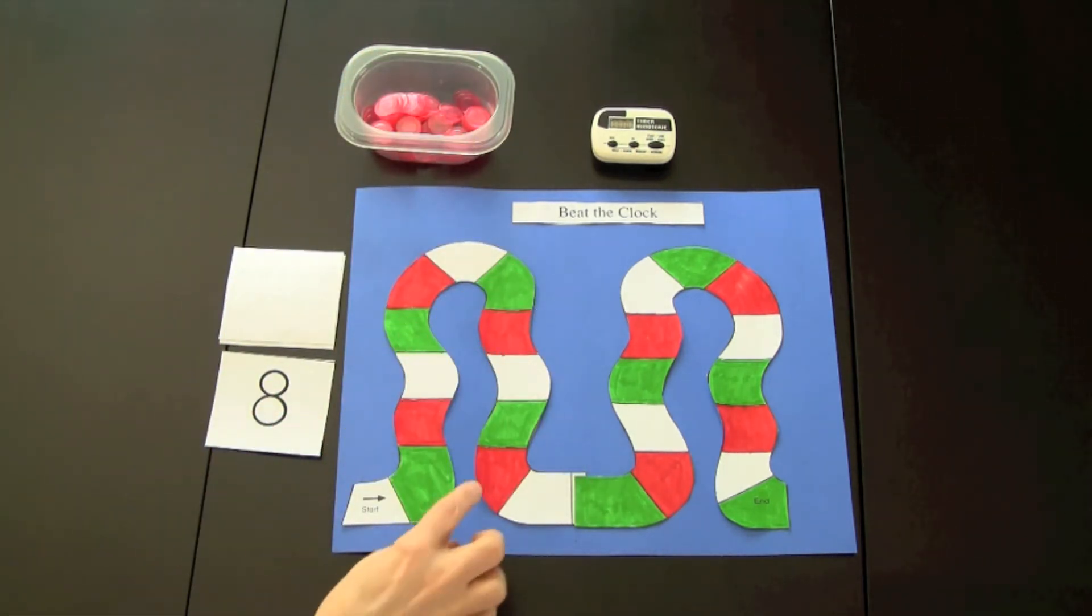Player 2 would take a turn and place that number on the game board. They would see if they could fill the game board before the timer goes off.